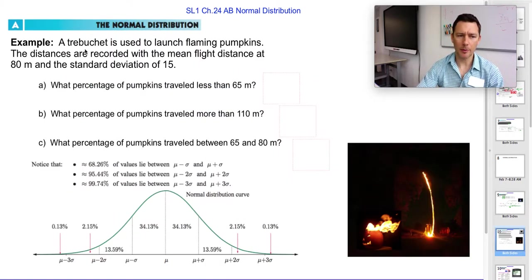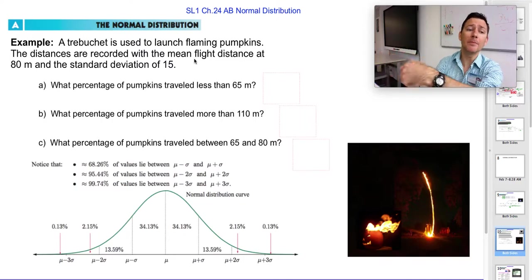So here's an example. A trebuchet is launching flaming pumpkins into the distance, and the flights are recorded with the mean distance of 80 meters and a standard deviation of 15 meters.